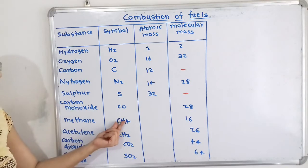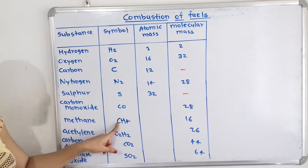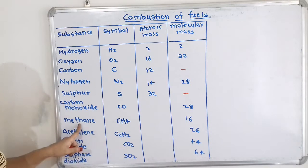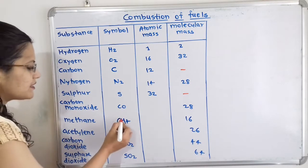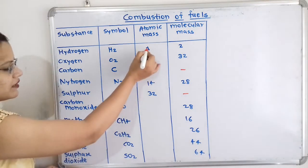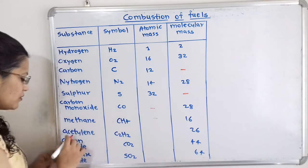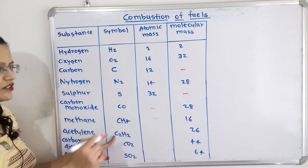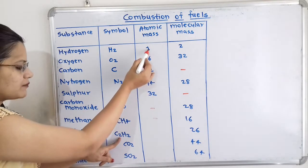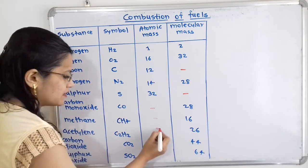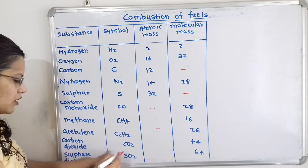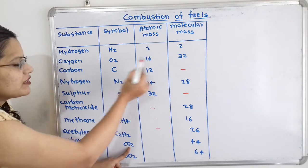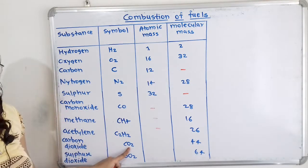Methane is CH4 — one carbon and four hydrogen atoms. Molecular mass is 12 plus 4 into 1, that is 16. Acetylene is C2H2 — two carbons give 24 plus two hydrogens give 2, so molecular mass is 26. Carbon dioxide CO2 has one carbon (12) plus two oxygen atoms (32), giving molecular mass 44.